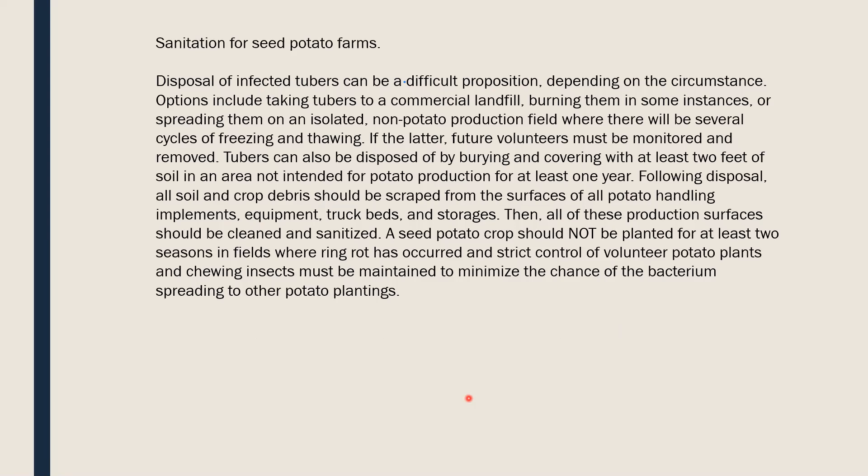Disposal of infected tubers can be difficult depending on circumstances. Options include taking tubers to a commercial landfill, burning them, or spreading them on an isolated non-potato production field where there will be several cycles of freezing and thawing. Tubers can also be disposed of by burying and covering with at least 2 feet of soil in an area not intended for potato production. Seed potato crops should not be planted for at least 2 seasons in fields where ring rot has occurred.